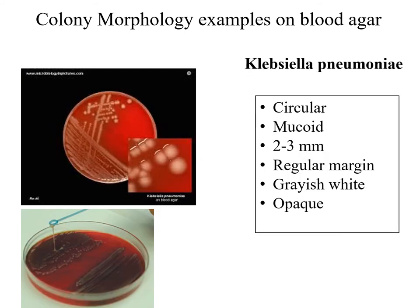Here we have Klebsiella pneumoniae. If we look at the colonies on blood agar, they are circular and mucoid — as we can see, they are sticky. They are 2 to 3 mm in diameter, have regular margins, are grayish-whitish in color, and have an opaque texture.